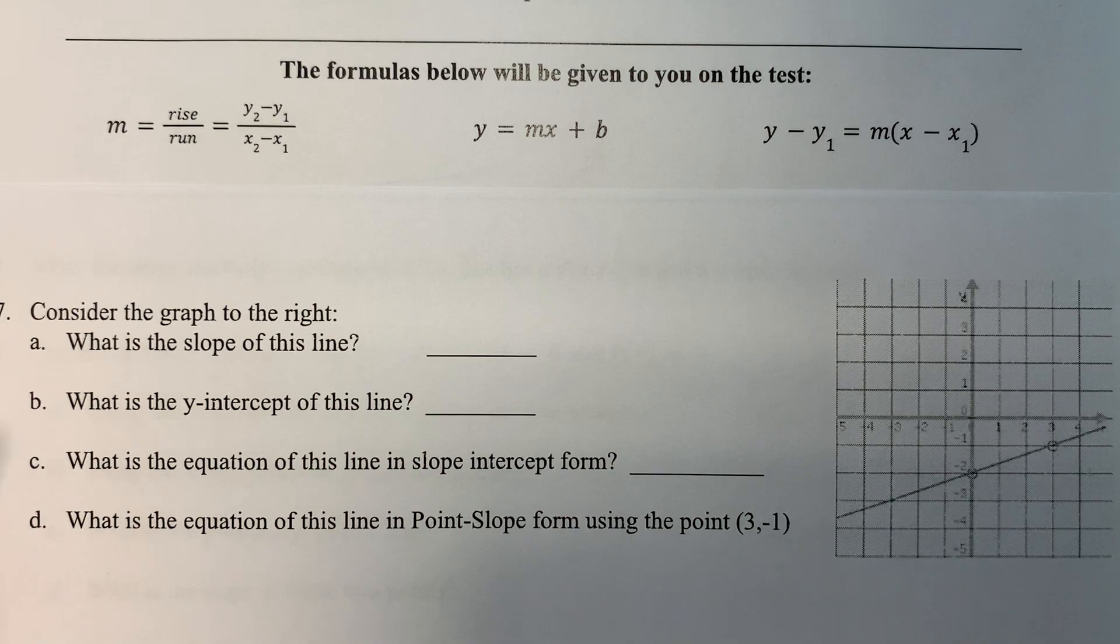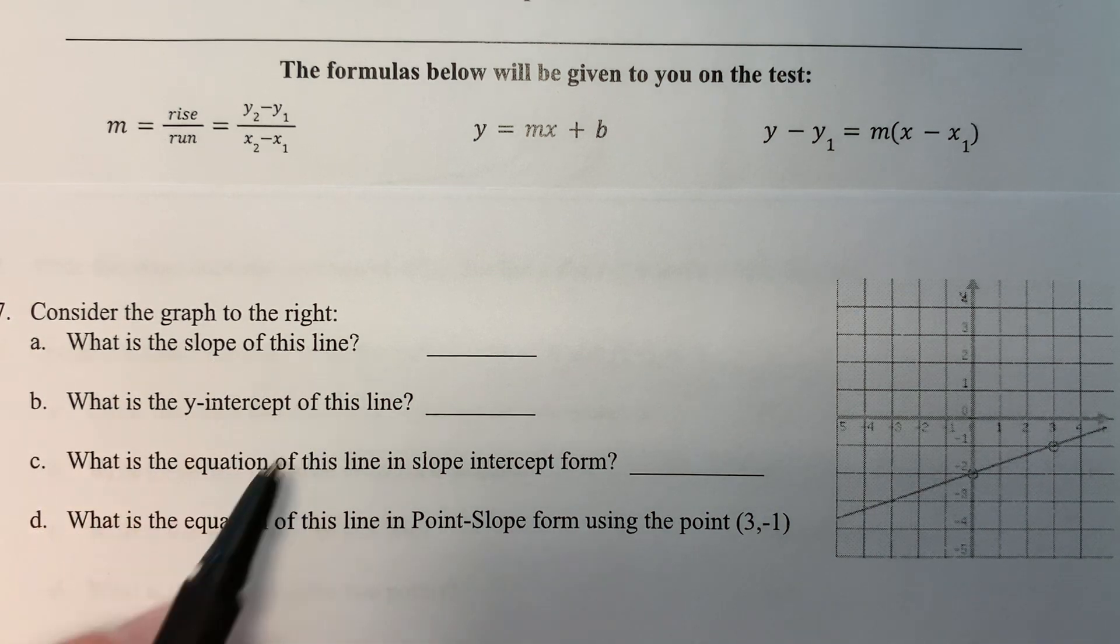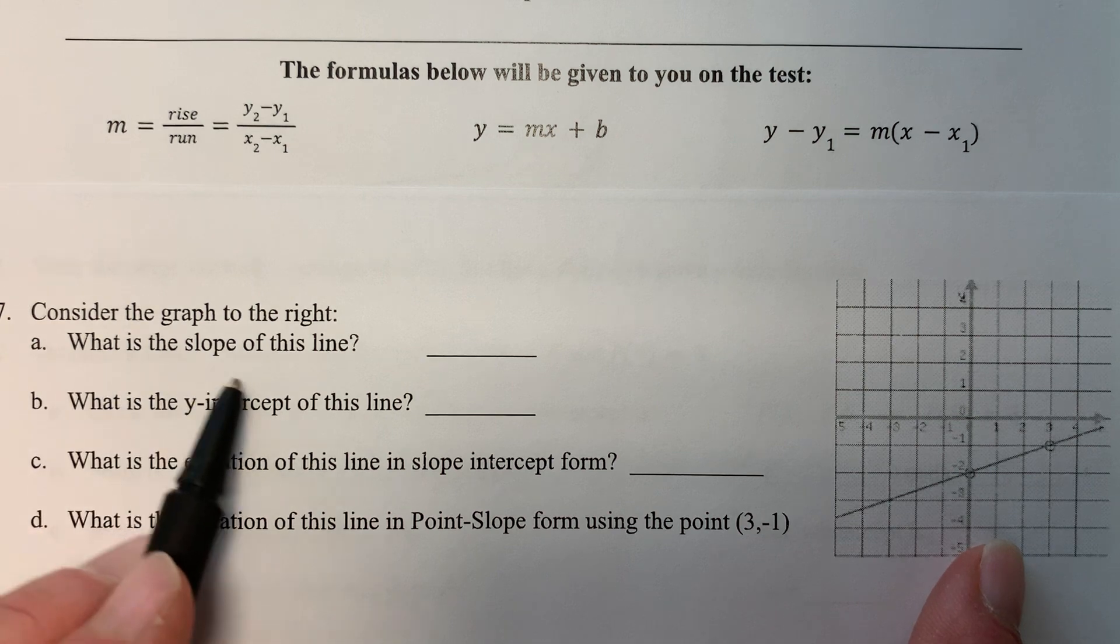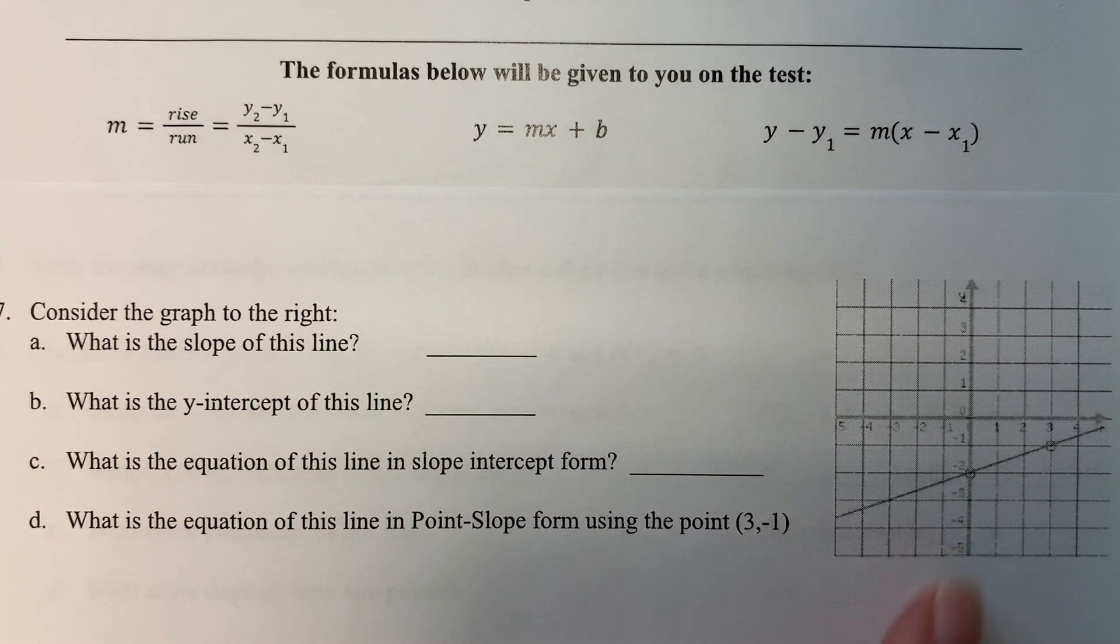For problem number seven, it asks us to consider the graph to the right. First, it asks what is the slope of this line? So let's get over here.